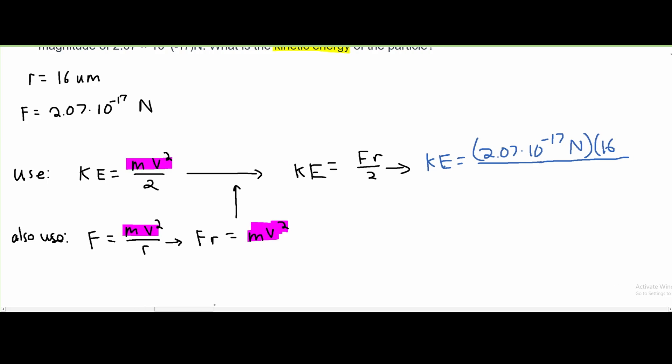And micro needs to be converted to just meters, so this is going to be 10 to the negative 6 meters. That's how you convert from micro to a normal unit. And then this is going to be divided by 2.